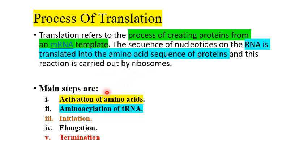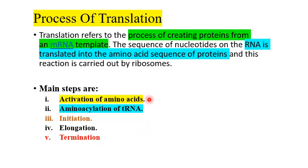The main steps of translation are: number one, activation of the amino acid; number two, amino acylation of tRNA or charging of tRNA; number three, initiation of protein synthesis; number four, elongation of the polypeptide chain; and number five, termination of protein synthesis. In this video I will be taking up only the first two steps — activation of amino acid and charging of the tRNA. The next three steps will be done in the next video.